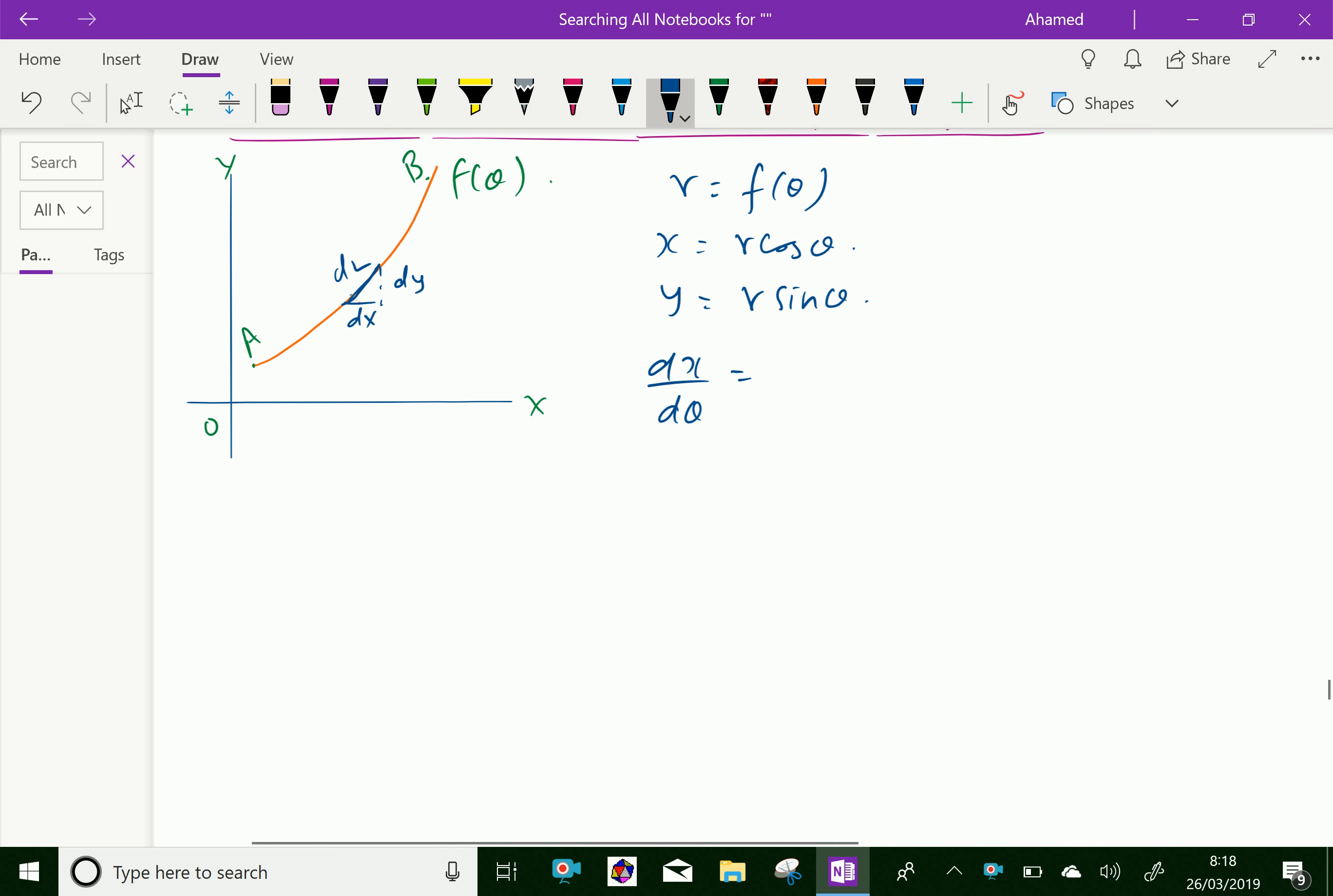This is the length of the infinitesimally small curve, dL. If you integrate it over the limits, the limits for angle to angle alpha to beta, L equals integral from alpha to beta of square root of r square plus dR by d theta whole square d theta. This is the formula for arc length, where alpha and beta are the initial and final angles in radians.